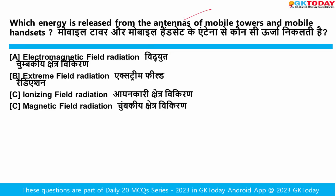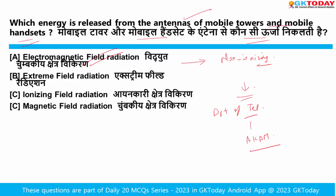Which energy is released from the antennas of mobile towers and mobile handsets? The answer is electromagnetic field radiation. This is a kind of electromagnetic energy released from mobile tower or mobile handset antennas, classified as non-ionizing and produced at extremely minimal energy levels. The Department of Telecommunication conducted a webinar as part of Azadi ka Amrit Mahotsav celebrations to create awareness about these electromagnetic fields.